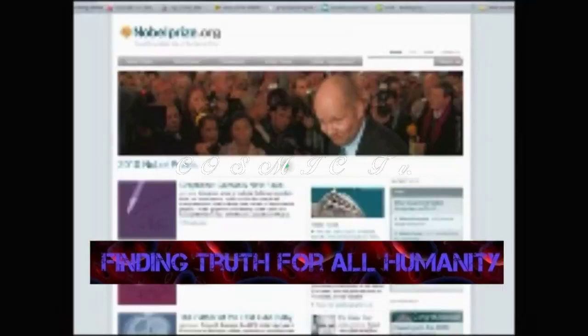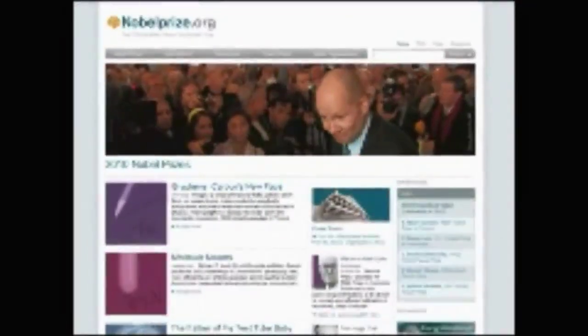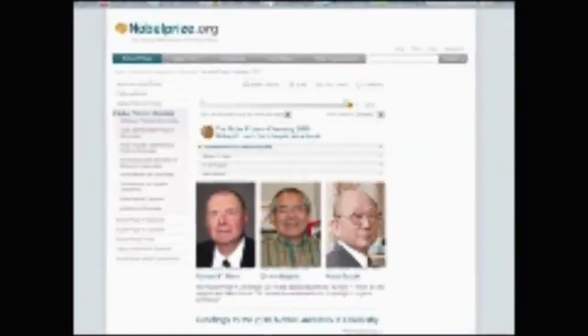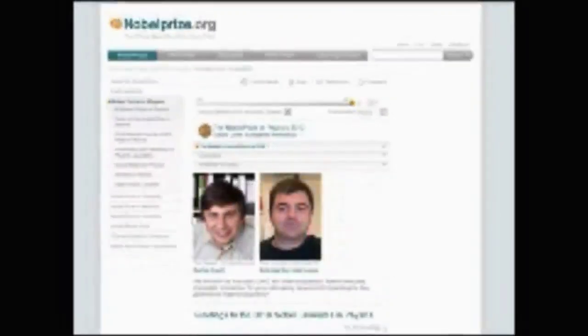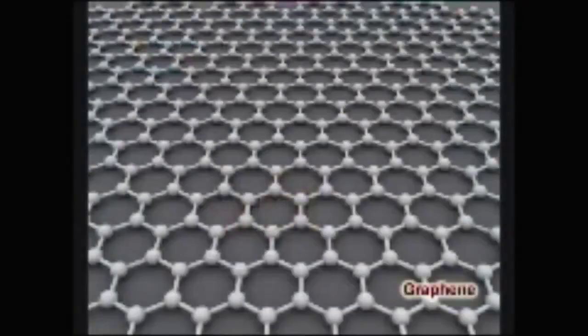The just-announced Nobel Prizes for both chemistry and physics have gone to research related to the carbon atom. The Nobel Prize for chemistry went to three scientists for developing a toolkit to manipulate carbon atoms, while the physics prize has gone to two Russian-born physicists for their study on the remarkable properties of graphene, an ultra-thin form of carbon.